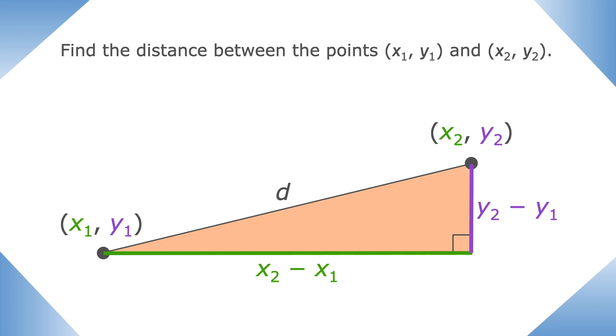Now we can plug this into the Pythagorean theorem. The distance squared will equal the horizontal distance squared plus the vertical distance squared. To simplify, we need to square root both sides.